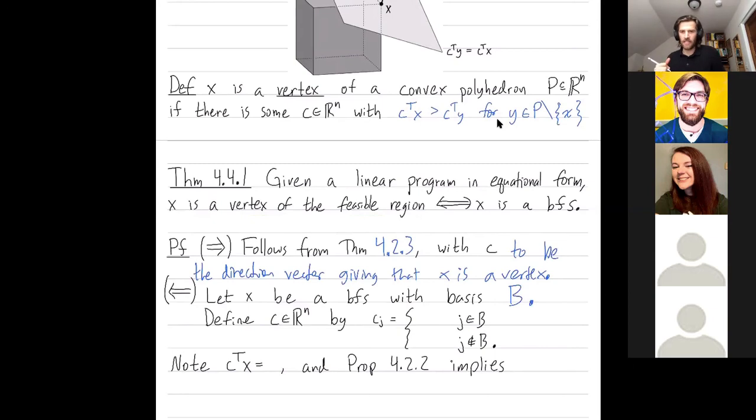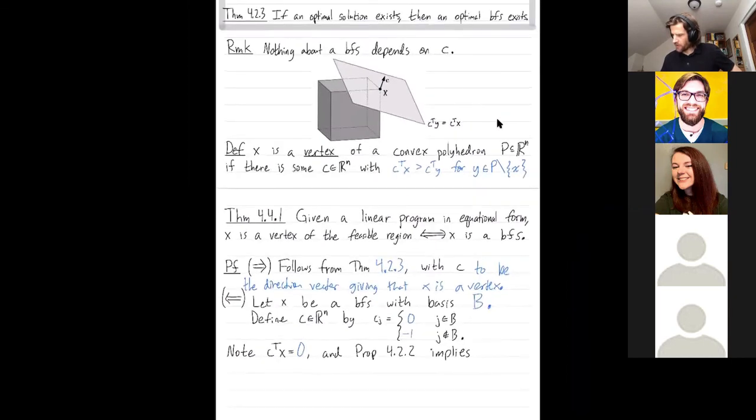We're going to define this direction vector C by letting its coordinate CJ be 0 if J is in the basis and otherwise be negative 1. So I'm using my basis to define a direction vector. What is C transpose X? Well, X is 0 in all of the entries that are not in the basis. So C transpose X is just going to be 0. Right? Because it can only be non-zero in these entries where C is non-zero, but X is 0 in all of those entries.